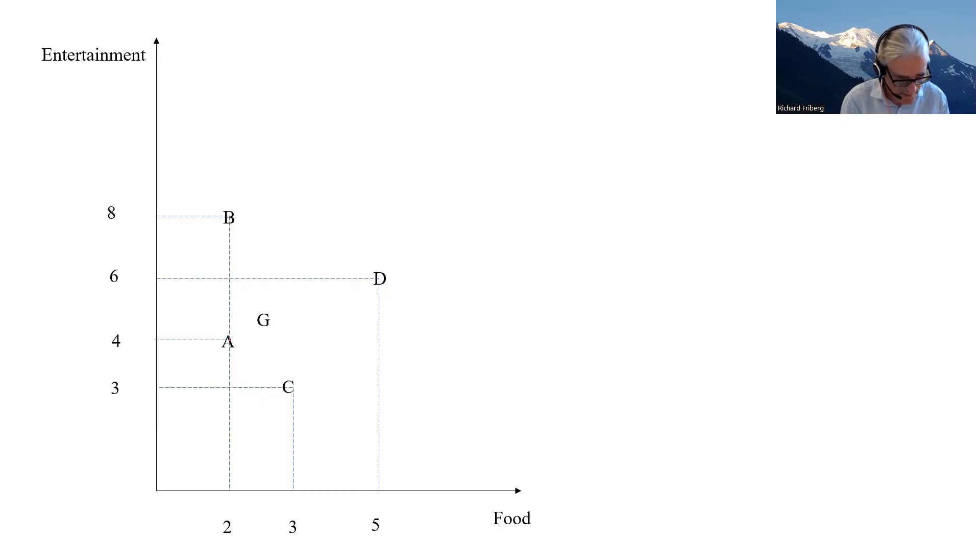Okay, so here bundle A, for instance, has four units of entertainment, four plays, four videos, four movies. So four units of entertainment and two units of food. Okay, so two dinners, let's say. So we have these different bundles, and we want to be able to rank them. Where are we going with this?